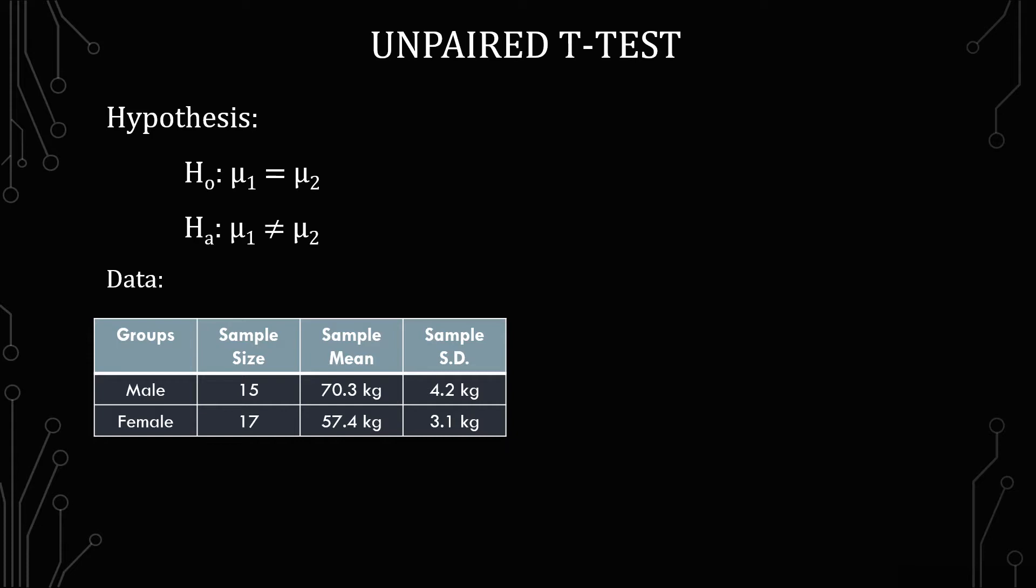We can see in the hypothesis that we have the null hypothesis being equals. So the first group sample mean is equal to the second group sample mean. And the alternative is the first group sample mean is different from the second group sample mean. So right off the bat this is going to be a two-tailed test.